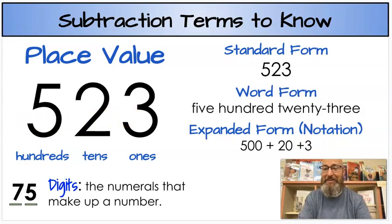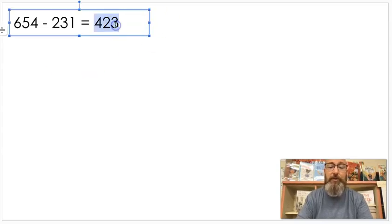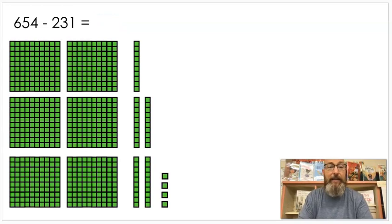Now that's a lot. Let's get started. So the first problem we're going to do today together is, and we're only going to do maybe three or four questions, and that's going to be it. I want to make sure you understand how to do it, but I don't want to give you a long lesson. 654 minus 231. Just ignore that answer there. When you're subtracting with models, the first thing you're going to want to do is build the minuend.